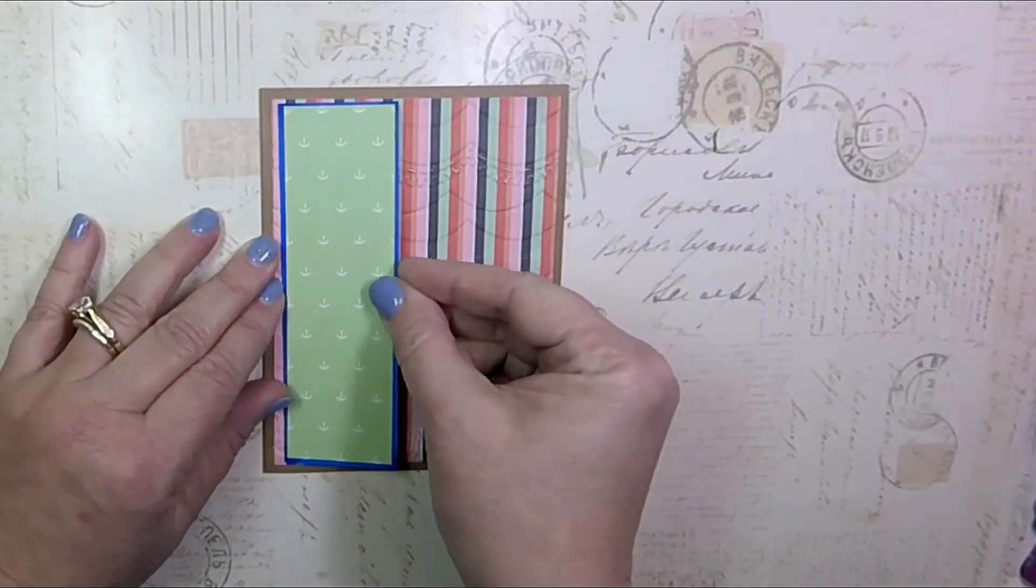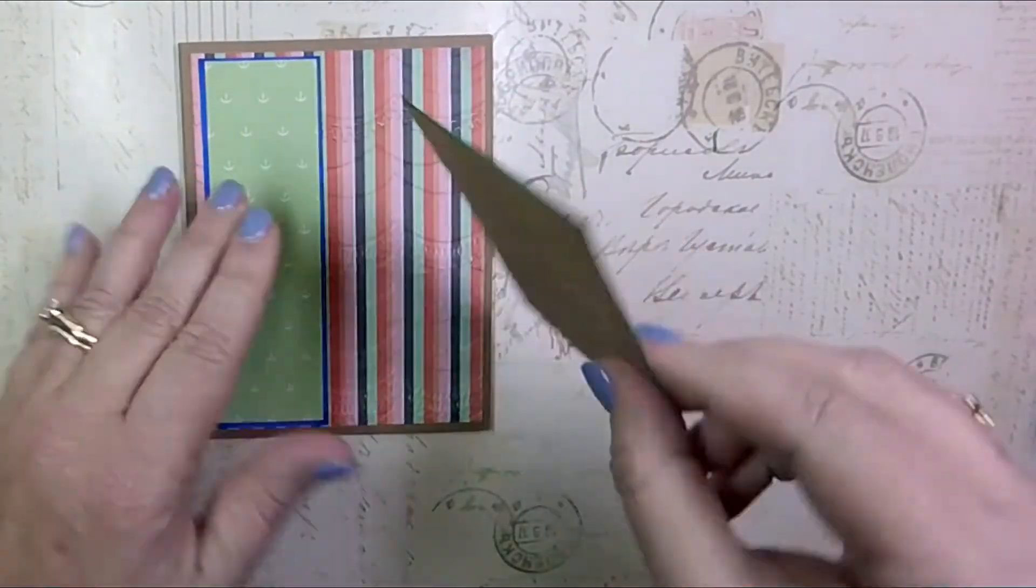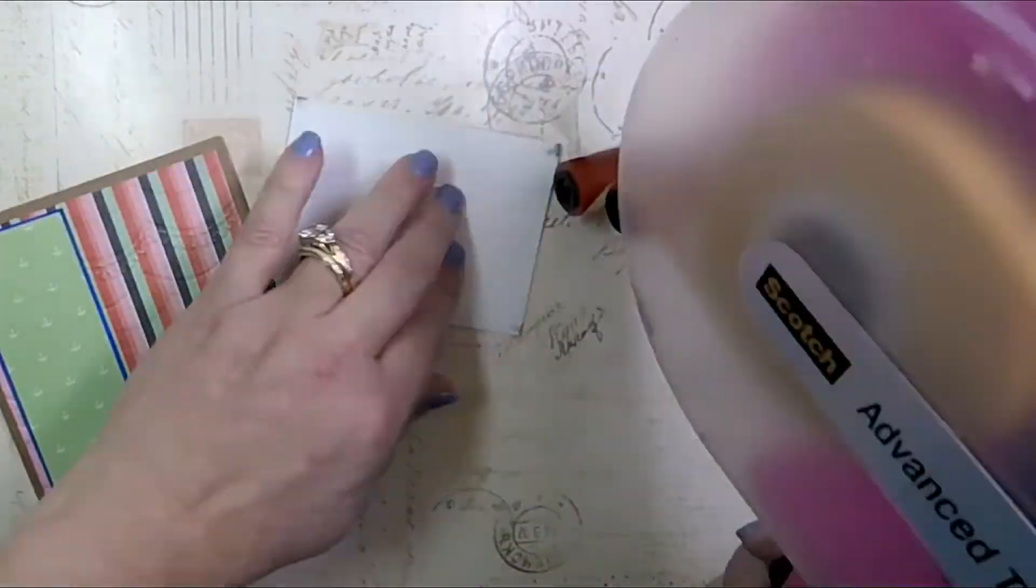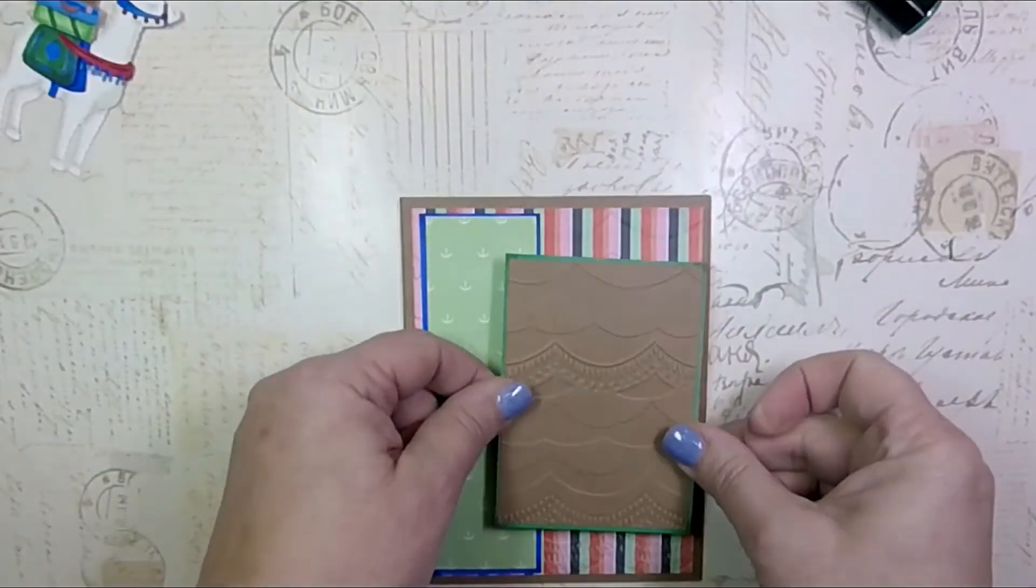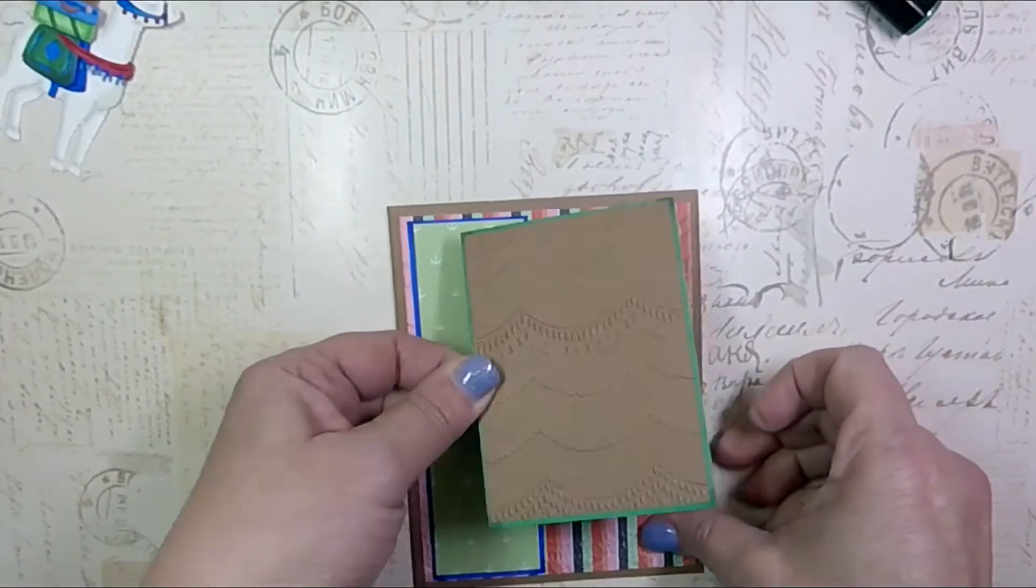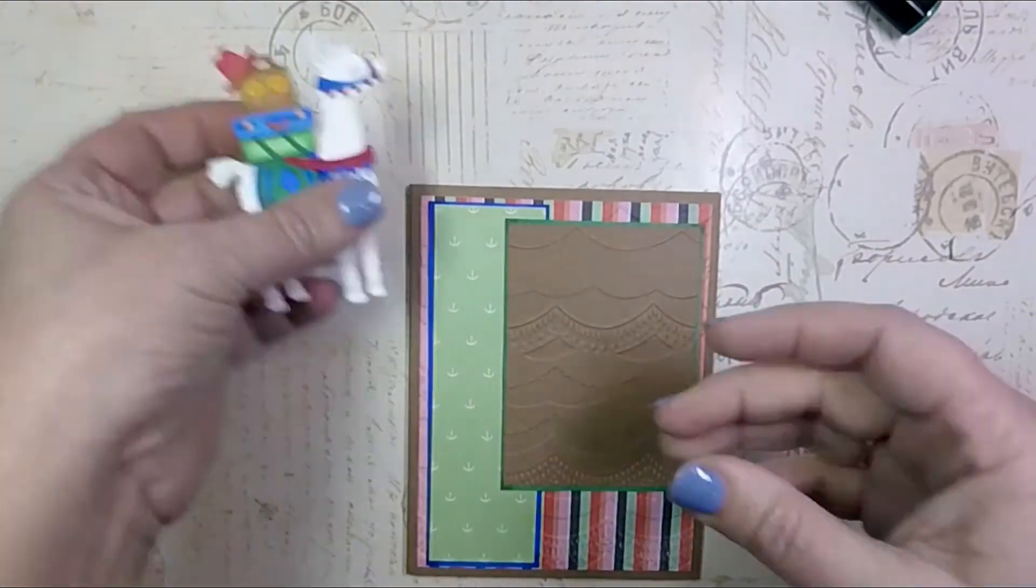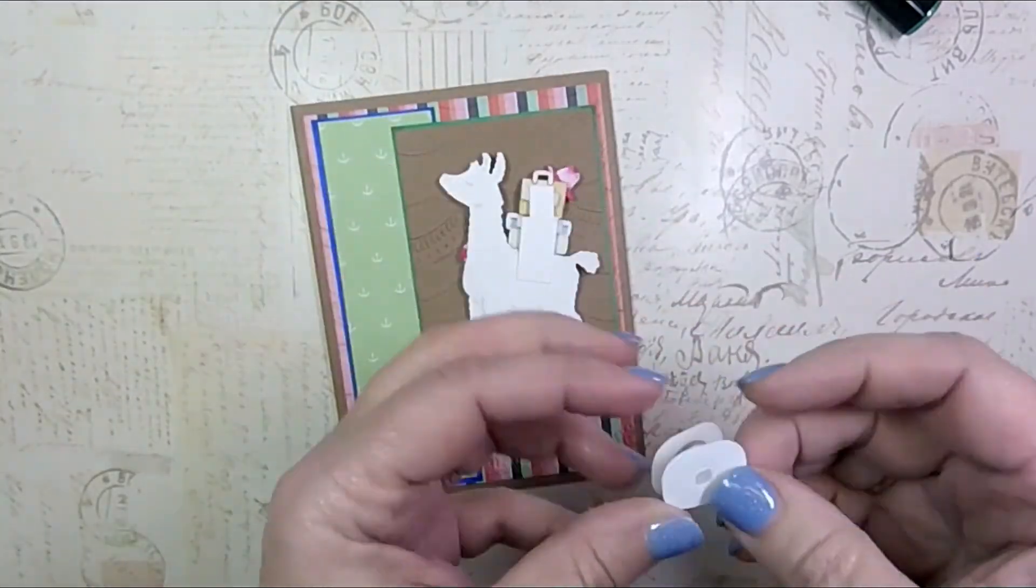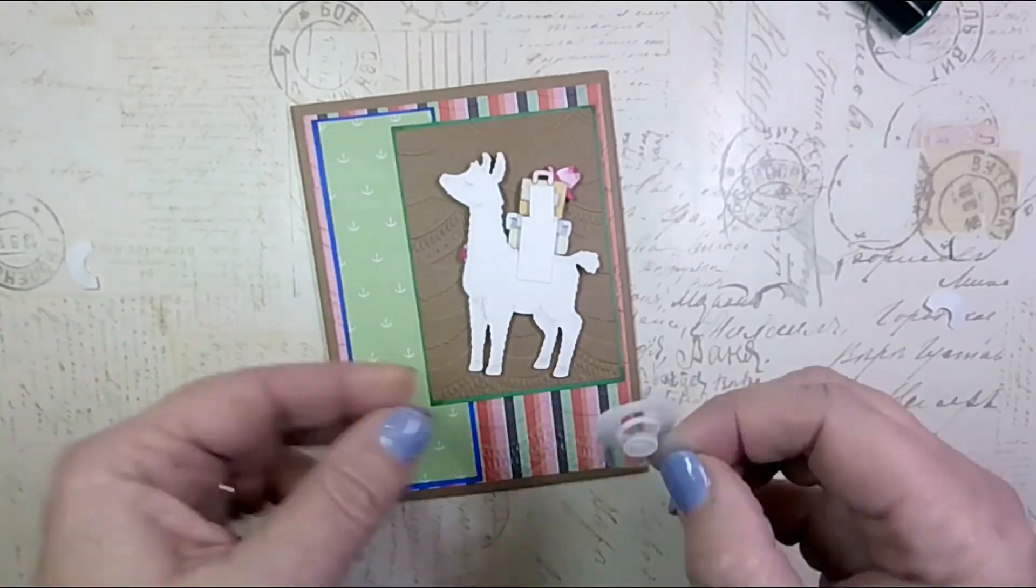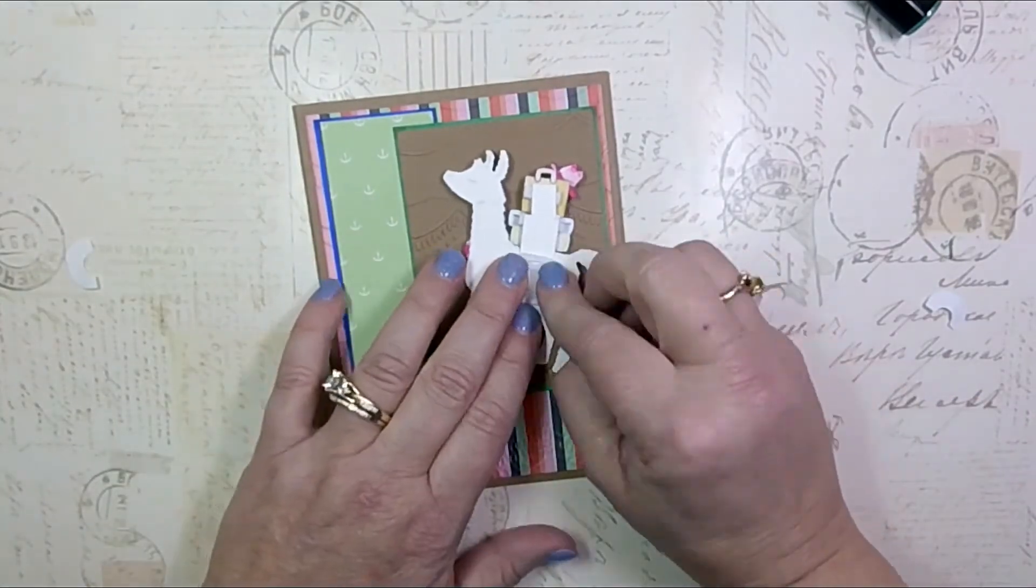And I also thought it kind of fit that theme that went with the llama. Now this is an A2 sized card, so that's four and a quarter by five and a half when it is shut and it opens on the side. So since this is a traveling llama, I decided to put a little action wobble. This is a miniature sized one.